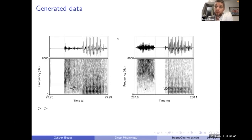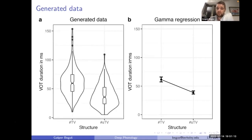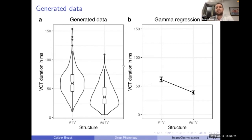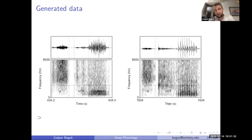The network learns to produce long VOT. You can hear that aspiration is gone when 's' precedes — the network learns to de-aspirate just like English speakers do. Behaviorally, there's a significant difference in VOT duration when 's' precedes, as seen in the generated output of the generator.